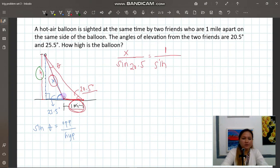But we can find theta by how? Observe this one, this part. This is a straight angle. This is equal to 180. Then this part is already 25.5 degrees. So meaning we can find this part by subtracting 25.5 from 180. So there you go.